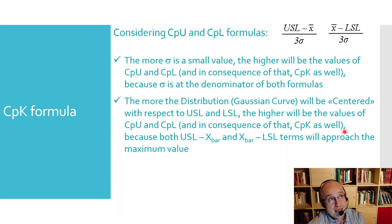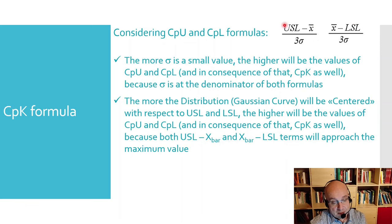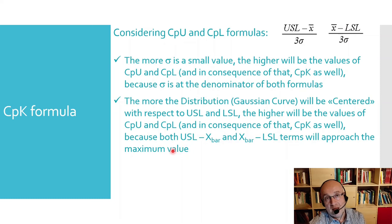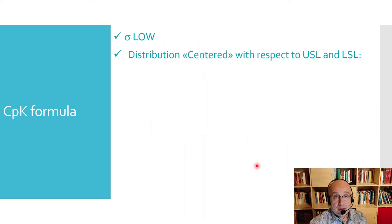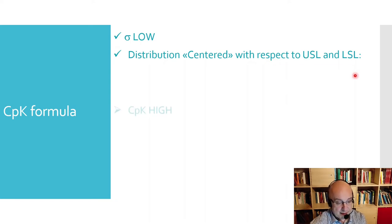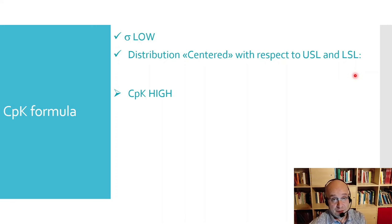Furthermore, the more the distribution is well-centered with respect to USL and LSL, the higher the values of CPU and CPL — and consequently CPK — because both numerator terms approach their maximum values when the curve is perfectly centered. So when sigma is low (distribution tall and narrow) and the distribution is perfectly centered with respect to USL and LSL, I will get a very high CPK, providing a very good forecast that my process will perfectly reflect the specification limits USL and LSL.